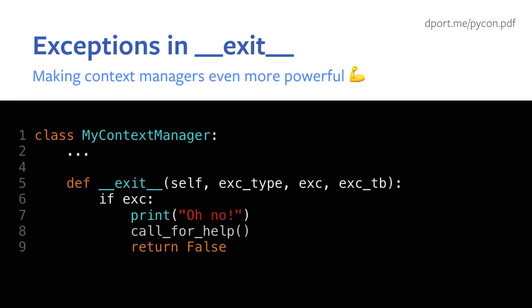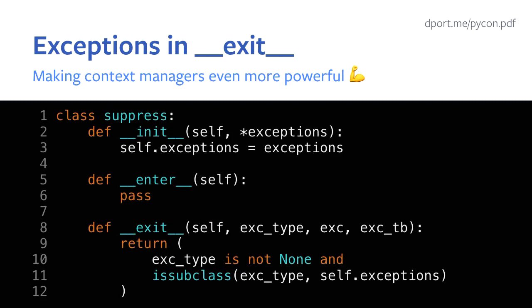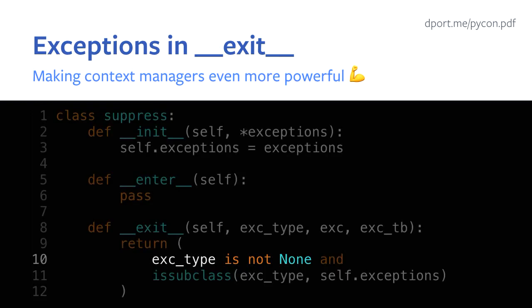For example, if an exception occurred within my context manager, I can react to it. If exception is None, this code won't trigger and we keep going. But if there was an exception, I'll print 'oh no' and call some help function. Then return False to re-raise the exception — you've handled it and then it surfaces. Using this, we can actually implement suppress ourselves, which is pretty much how suppress is implemented in contextlib. If your exception was a subclass of the exceptions you initialized with, that Boolean resolves to True and the exception is ignored.